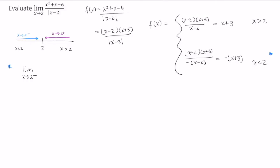So when we approach 2 from the left, the limit of x squared plus x minus 6, this becomes the limit as x approaches 2 from the left of negative x plus 3.